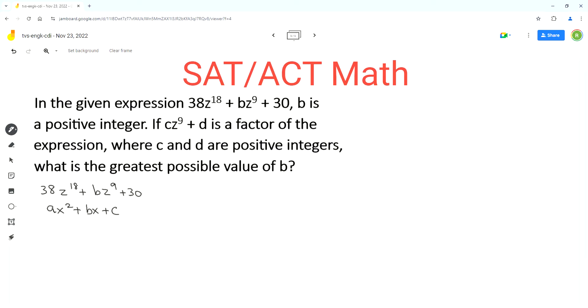In the given expression, the exponent on z is double that of the exponent on z in the second term, so we can treat the given expression as a complex trinomial. As per the problem, the factor of the given expression is cz^9 + d, where c and d are positive integers.